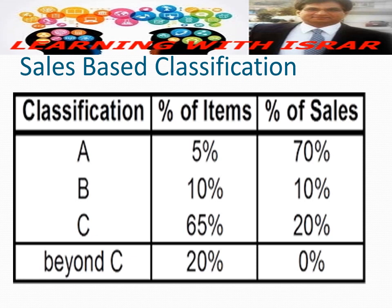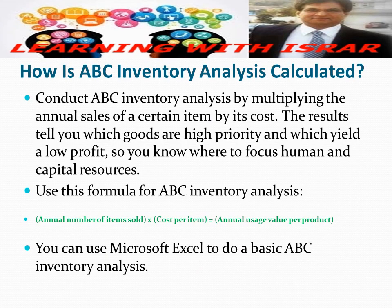So how is ABC inventory analysis calculated? You conduct ABC inventory analysis by multiplying the annual sales of a certain item by its cost. The result tells you which goods are high priority and which are low priority, so you know where to focus human and capital resources. The formula is: annual number of items sold multiplied by the cost per unit equals the annual usage value per product.